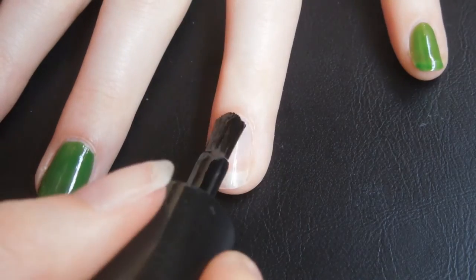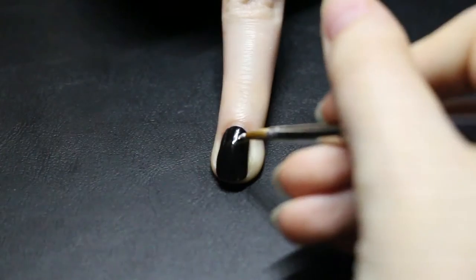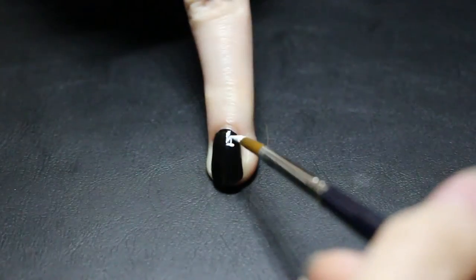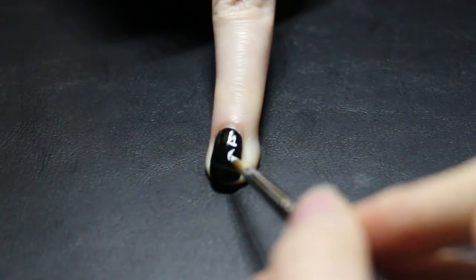For the ring finger I was inspired by the matrix. I wanted to create the green numbers on a black background. Start with painting your nail black and add some random numbers.